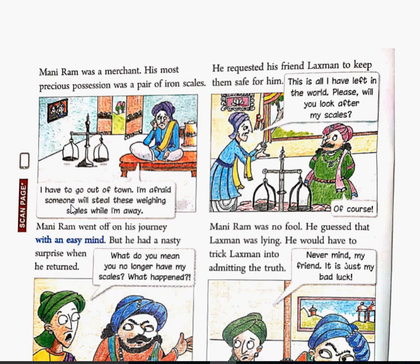So what did he do? He requested his friend Lakshman to keep them safe for him. Toh Mani Ram Lakshman ke paas gaya ta ki wo Lakshman uske tarazu ki dekh bhal kare. As he thought that Lakshman was his very trustworthy friend aur wo uske iron scales ko safe rakhenge. Mani Ram said, 'This is all I have left in the world. Please, will you look after my scales?' And he requested Lakshman to take care of them.